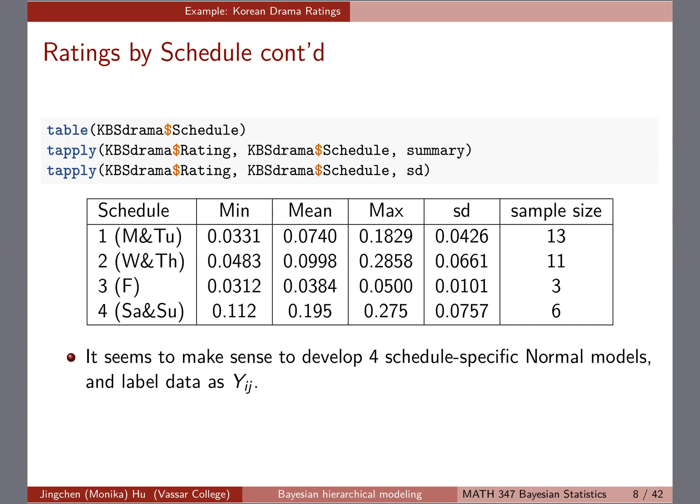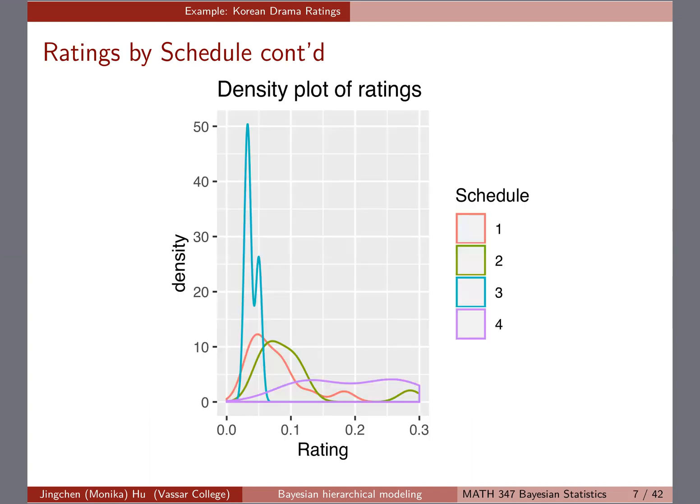What I was trying to get is: the rating itself is a continuous variable being measured. Based on what we learned so far, using the normal model probably makes sense. However, when we plot using density plots by schedule, you can see that different schedules follow very different normal distributions.